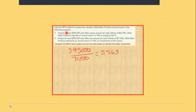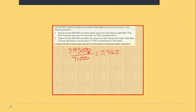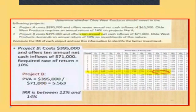Now we look at Project B. Project B has a cost of $395,000 and net cash inflows of $71,000. Dividing 395,000 by 71,000 gives us 5.563, so the IRR is between two values on the table.